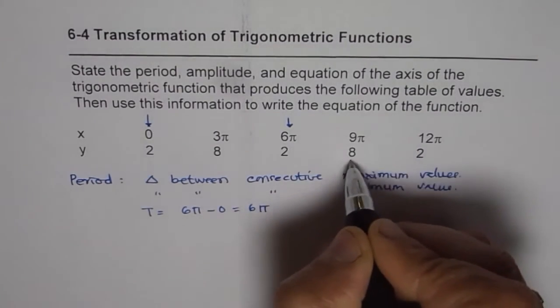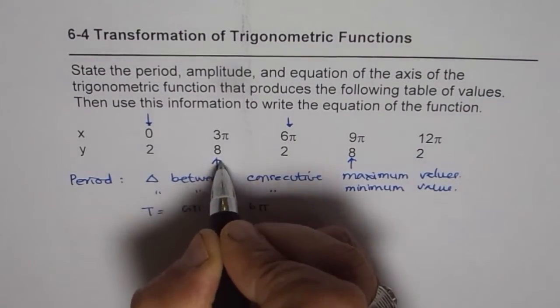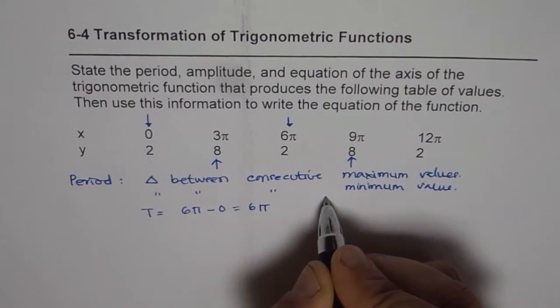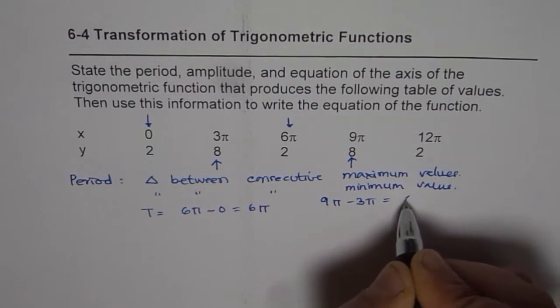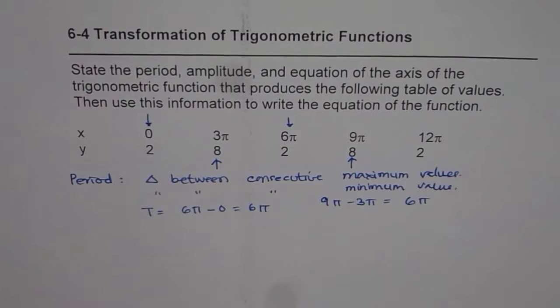You could also calculate from the maximum values: 9π minus 3π, which also gives you 6π. So that gives you the period.